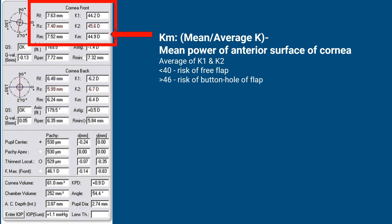Km is the mean or average K — it is the mean power of the anterior surface, which is the average of K1 and K2. As mentioned before, less than 40 is the risk of a free flap and more than 46 is the risk of a buttonhole in the flap.